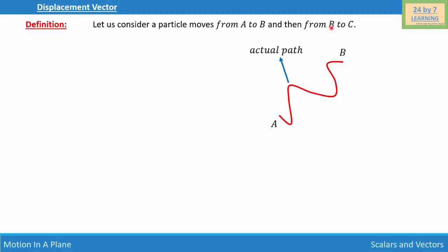The particle is also going from B to C, so this is another path the particle is taking. Point B leads to point C, and that is the actual path of the particle. As we know, the actual path of a particle is different from the displacement, which is the actual change in position.